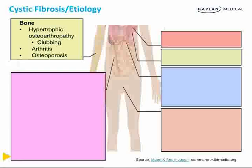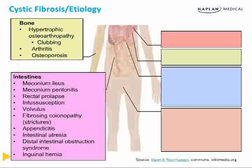In the bones, patients with CF sometimes develop hypertrophic osteoarthropathy — a condition seen in a variety of lung disorders — which can result in clubbing of the fingers. Patients can also have arthritis and, in cases of severe vitamin D deficiency, osteoporosis. In the intestines, infants with CF are often born with meconium ileus, a result of poor exocrine function in the gut. Throughout the rest of life, complications can include rectal prolapse, intussusception, volvulus, appendicitis, and inguinal hernias.